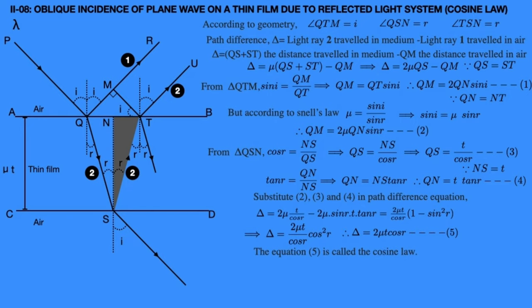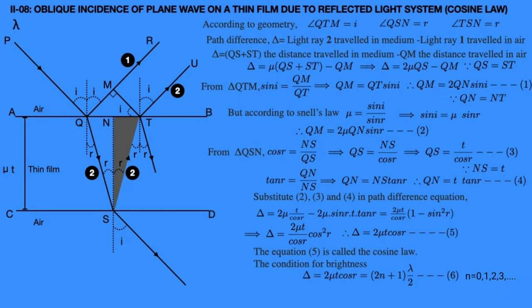This equation applies to the reflected light system. The condition for brightness (constructive interference) for rays 1 and 2 is: delta equals 2 mu T cos R equals (2N plus 1) times lambda divided by 2, where N equals 0, 1, 2, 3, and so on. Assume this is equation 6. The condition for darkness (destructive interference) for rays 1 and 2 is: delta equals 2 mu T cos R equals N lambda, where N equals 1, 2, 3, and so on. Assume this is equation 7.